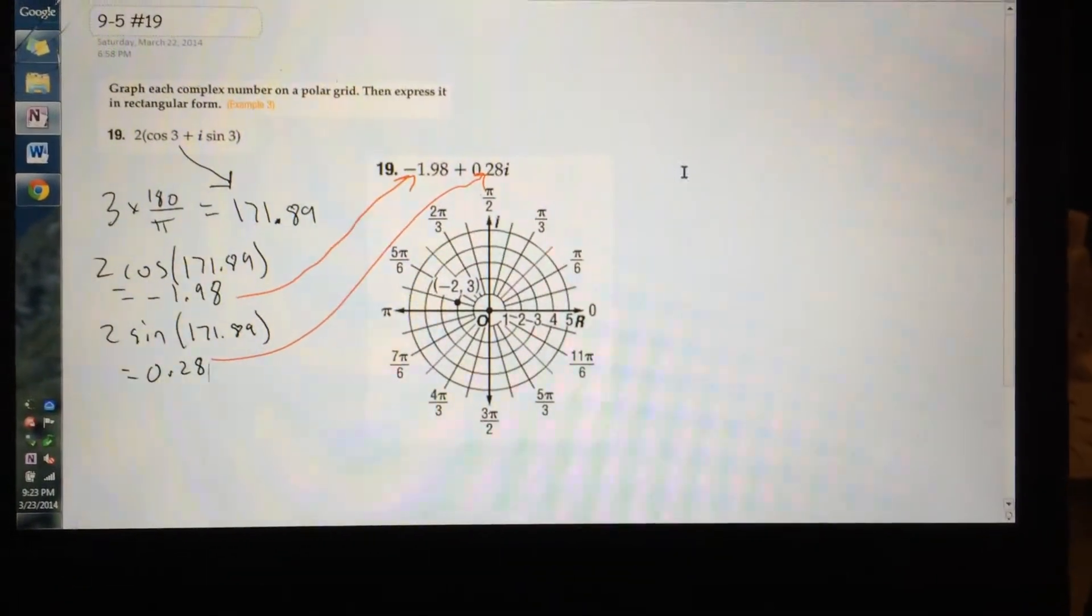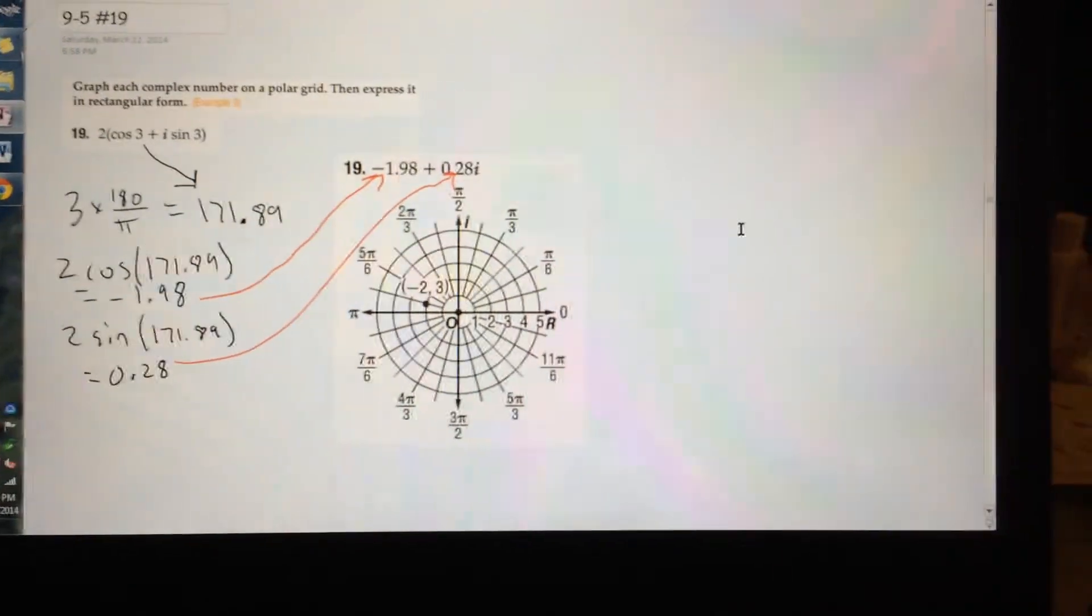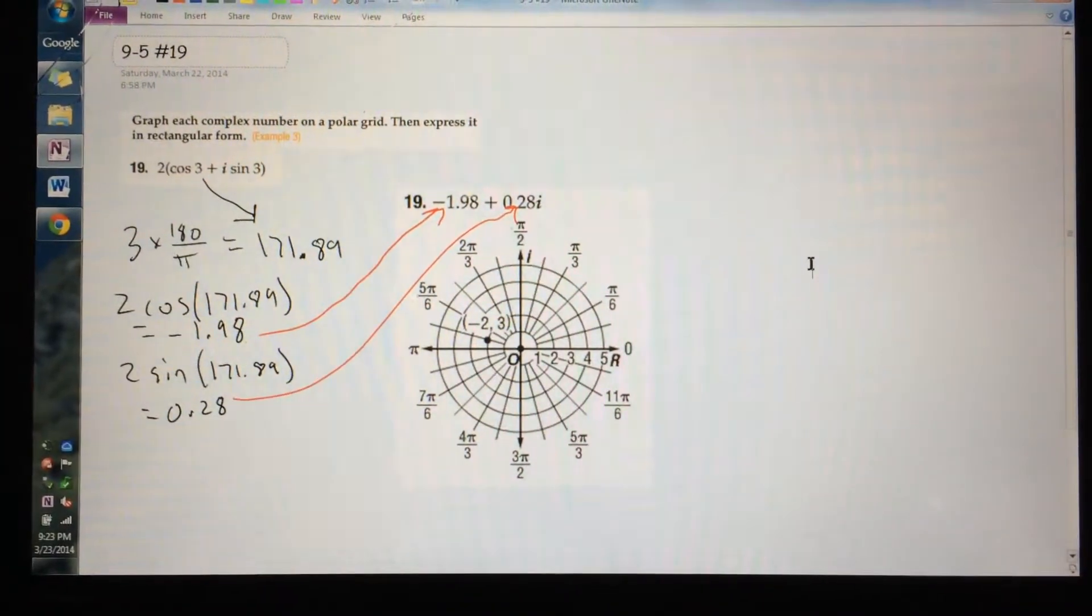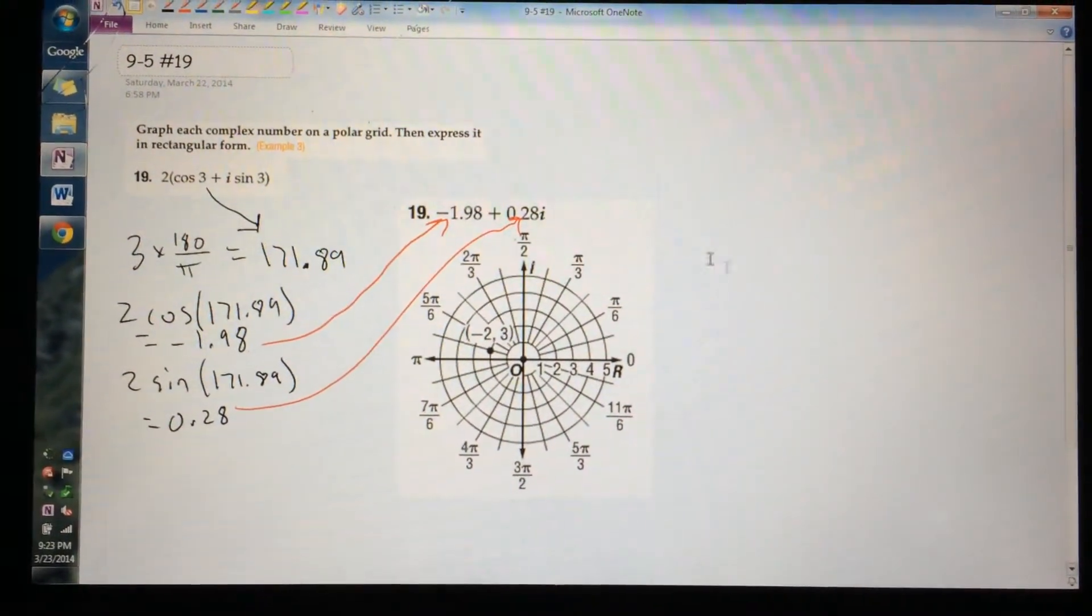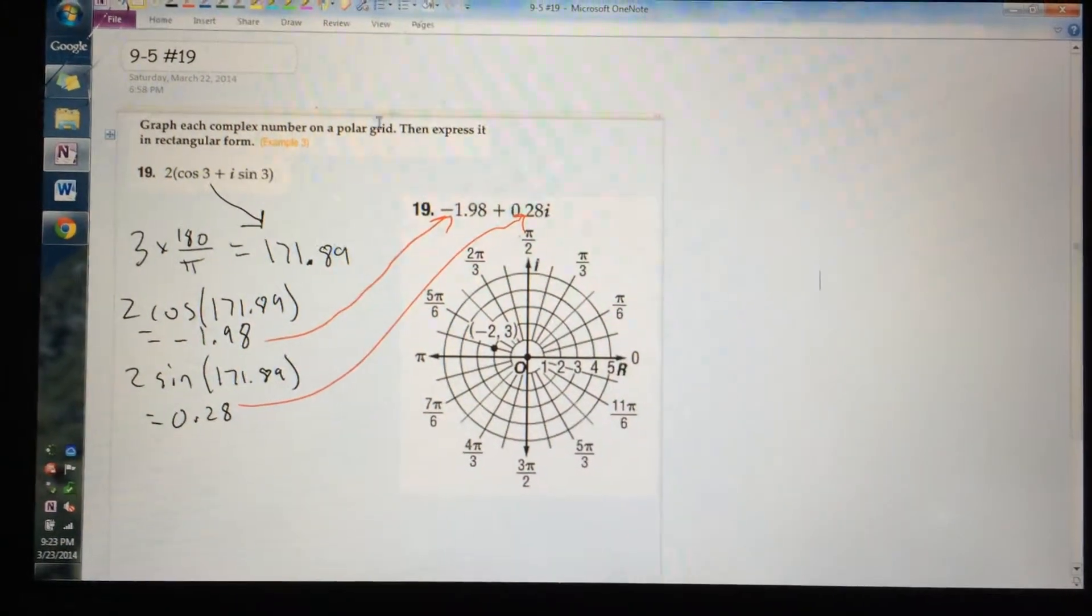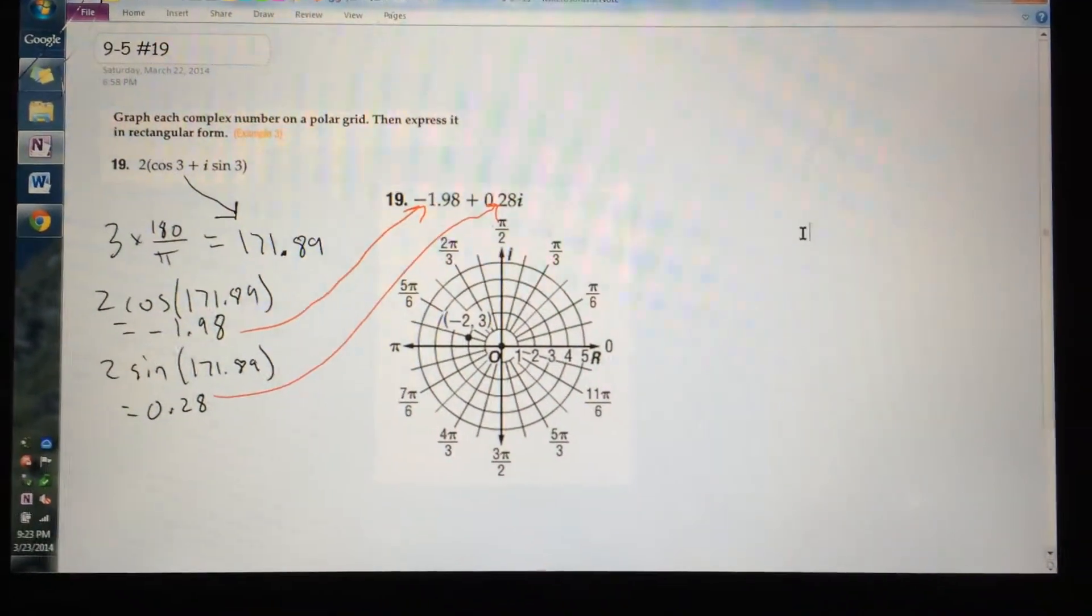Hello, Ms. Ochsner. I finally decoded how to do this problem. I'm going to teach you how to graph this complex number on a polar grid and then express it in rectangular form.